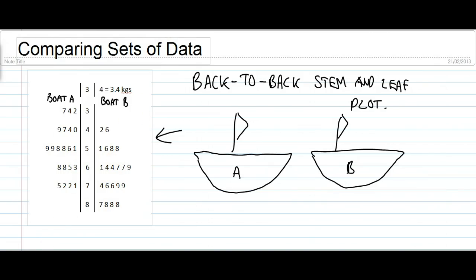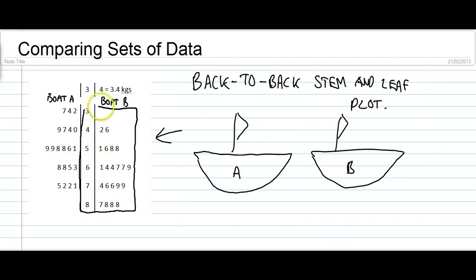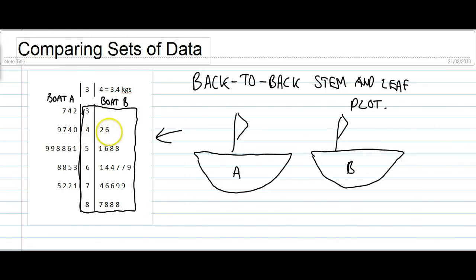One feature worth highlighting on a back-to-back stem and leaf plot is that for the right-hand set of data, the stem and leaf plot looks exactly like a normal stem and leaf plot would on its own. That is to say that the numbers, as they get further away from the stem, they get bigger. So the two is close to the stem, the six is further away. The one here is close to the stem, and the larger numbers are further away.